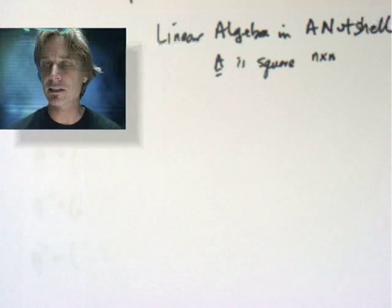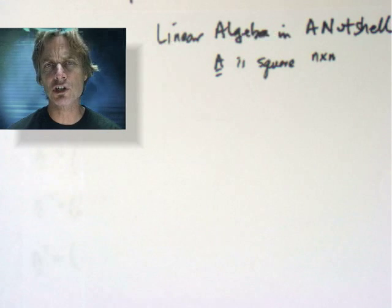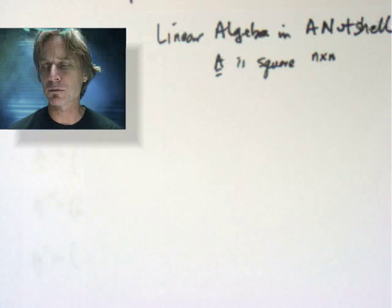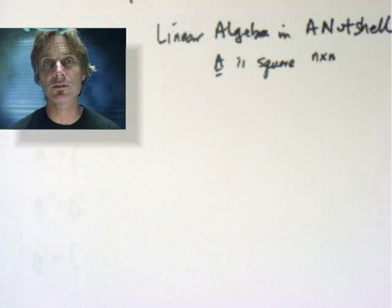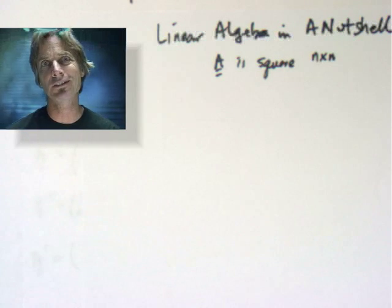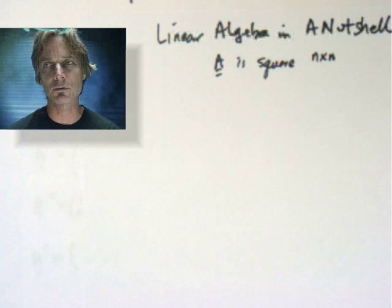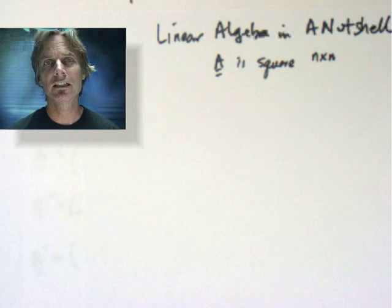Now, the last two statements. A transpose A is symmetric positive definite. Well, we actually showed that once, but I'm not going to worry about positive semi-definite as the other thing. And then A has n positive singular values. We're not going to talk about singular values. In fact, I don't even know about singular values myself, so that's not going to come into this discussion.